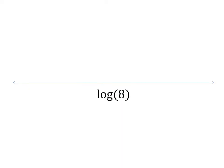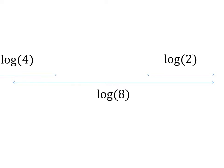Graphically, dividing 8 by 2 looks like this. We start with a line whose length represents the logarithm of 8. Then we place a line next to it whose length represents the logarithm of 2. The difference between these two lines represents the length of the logarithm of 4.